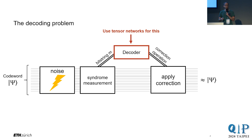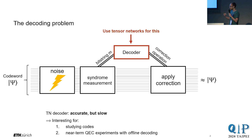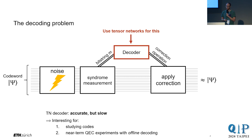Very broadly speaking, when we evaluate the decoding algorithm, we usually do it according to two criteria: speed and accuracy. Tensor network decoders are typically very accurate, but they're often on the slower side. The decoders I'm going to show you today are probably too slow to be realizable in real-time error correction, but having these slow but accurate decoders can be very interesting. They might allow you to study codes and get a feeling for what sort of logical error rates you can possibly achieve.